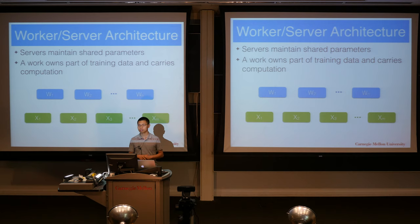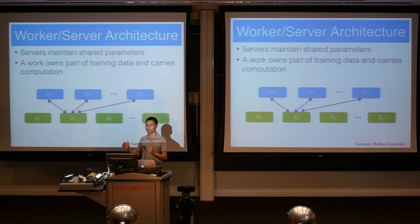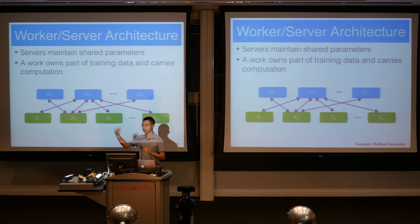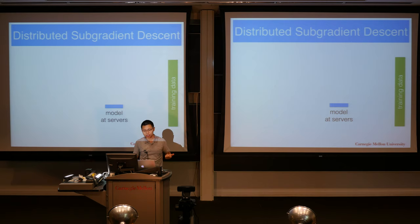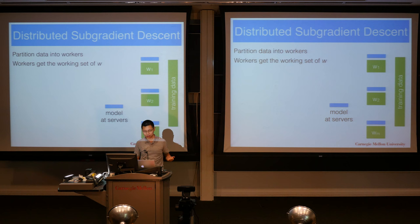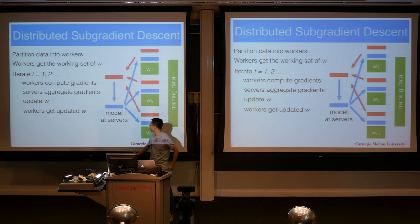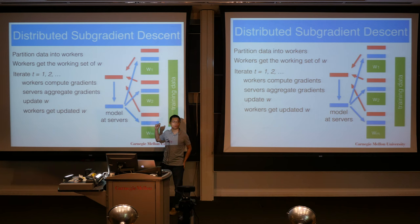In the parameter server, you have two groups of machines: servers and workers. A worker can communicate with servers — for example, pushing gradients to servers. Servers can also communicate with worker machines — for example, when workers request the updated model. This is essentially all-to-all communication. Implementing gradient descent is similar to what we've discussed, with two differences: multiple machines store the model, and a worker may not be able to hold the entire model in its own memory.